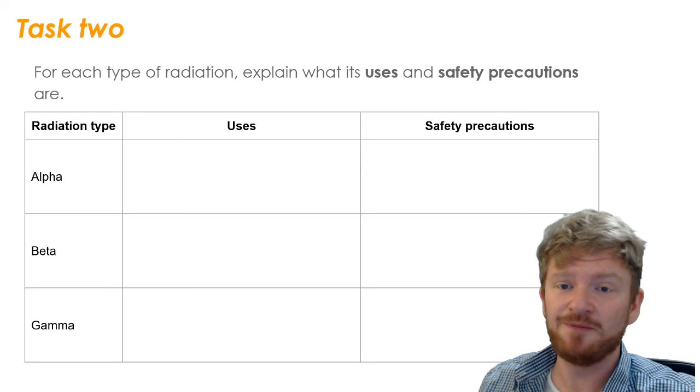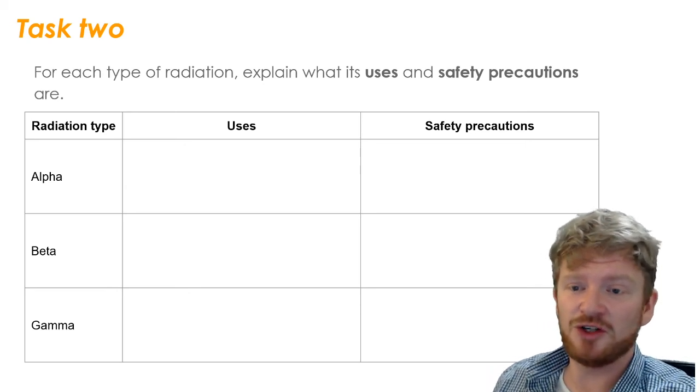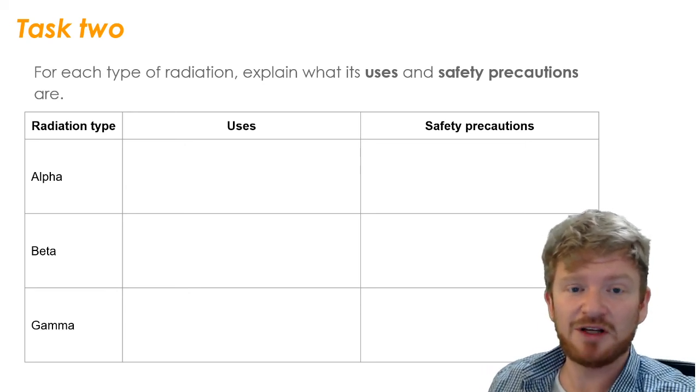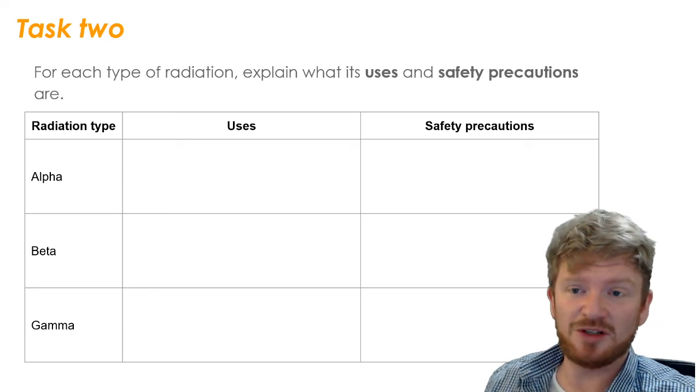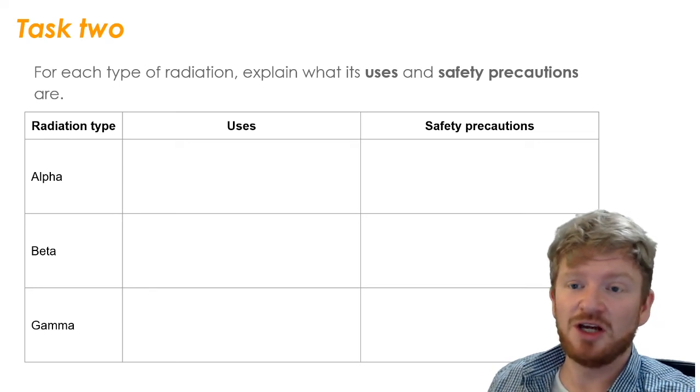So if you haven't already done so, what I'd like you to do now is just do a little bit of research on the uses of alpha, beta and gamma and the safety precautions. And what I'll give you is a little template for you to fill out with these things in there.